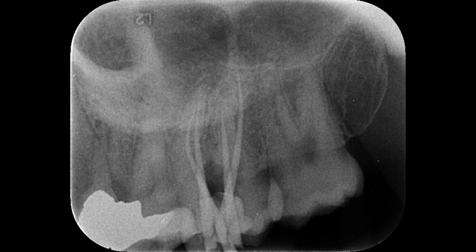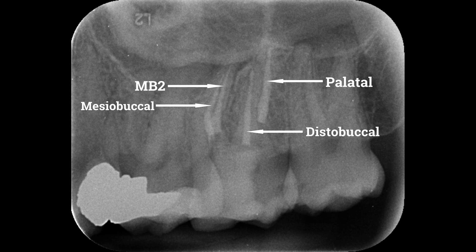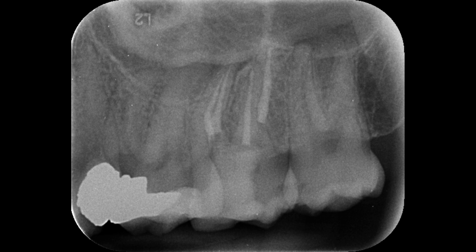All four canals are visible here. After obturation I did the restoration. Here is the final radiograph. This is the mesiobuccal canal, this is the distobuccal canal, this is the palatal canal, and this is the MB2 canal. This is the distal view radiograph where you can see all four canals clearly. After that I placed a composite restoration.